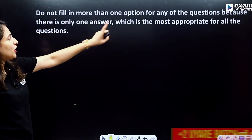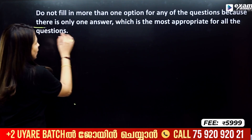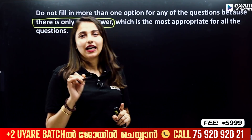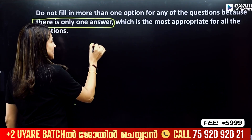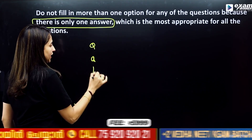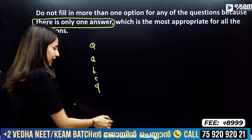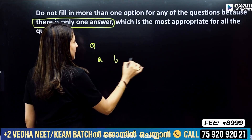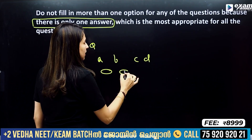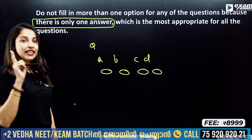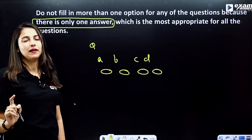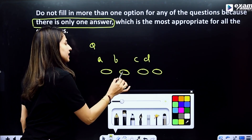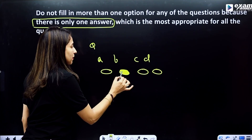Do not fill more than one option for any question, because there is only one answer. This is MCQ — there are 4 options: A, B, C, D. You must fill the correct bubble. Make sure you fill the correct answer so that it is obvious and clear to the scanning system. If it is not clear, your answer can be rejected.